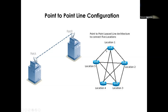Every link here only carries the communication of the two devices on either side. For example, if machine one wants to talk to machine two, they must have a direct link — machine one cannot send a message to machine two through other devices. You can only send a message directly to a device if you have a direct link with it. That's point-to-point: one channel, and that channel is dedicated to those two devices.